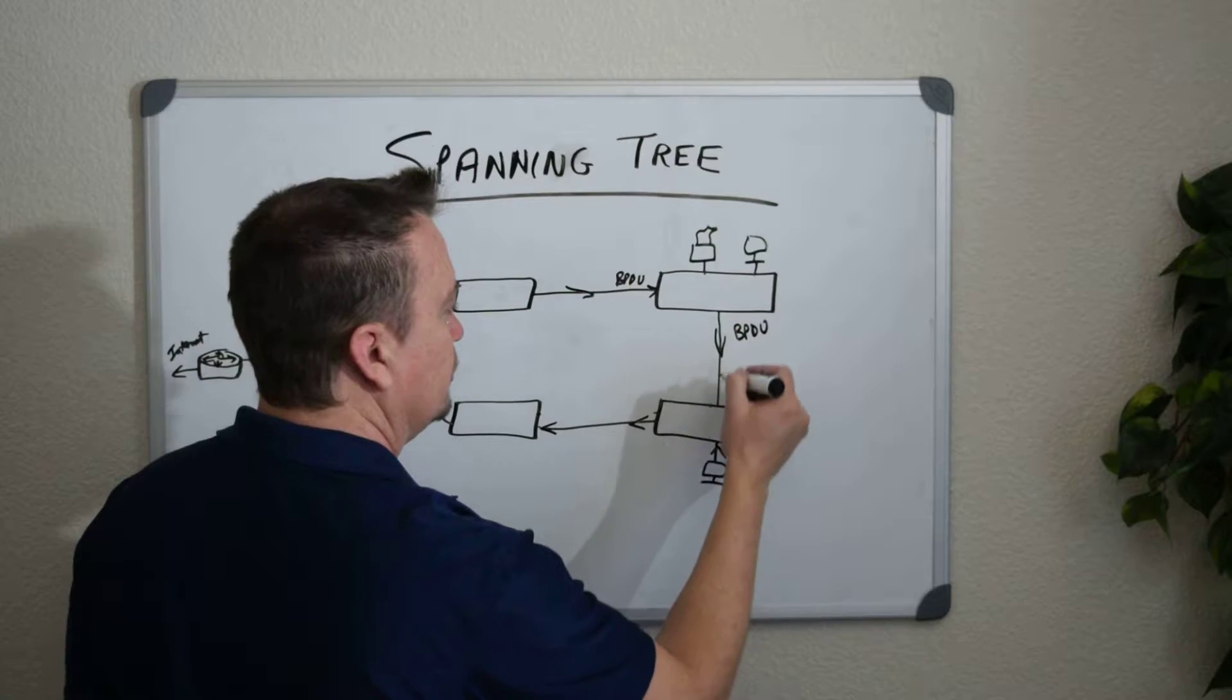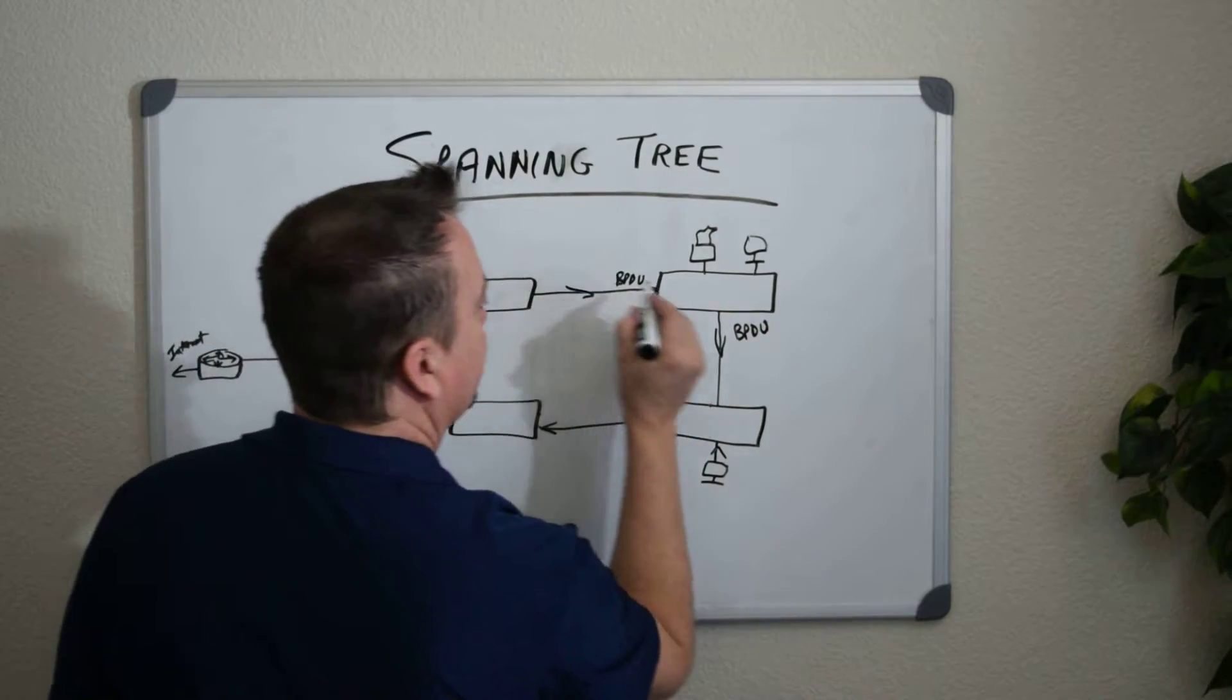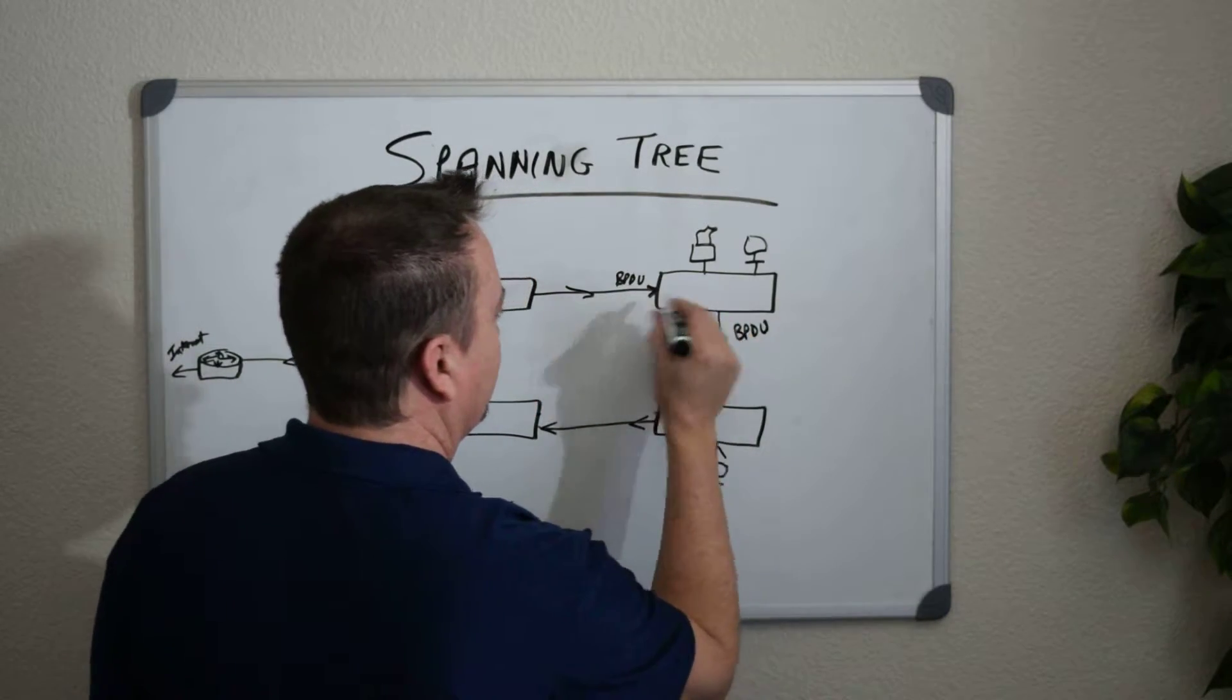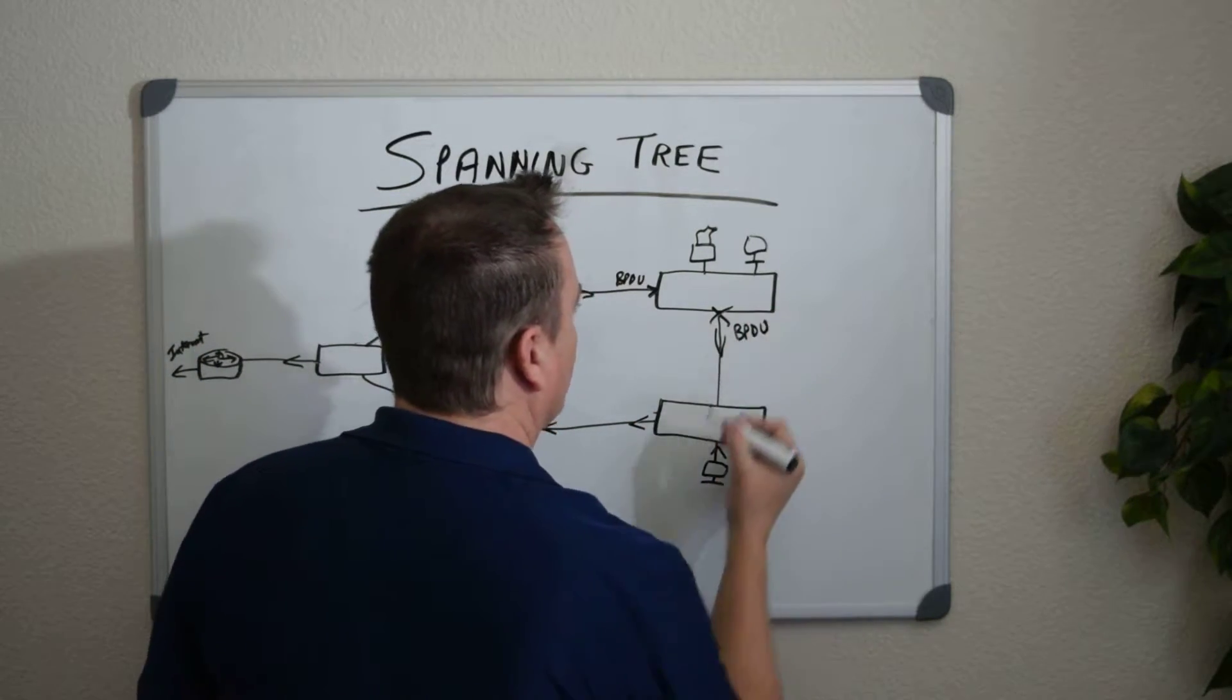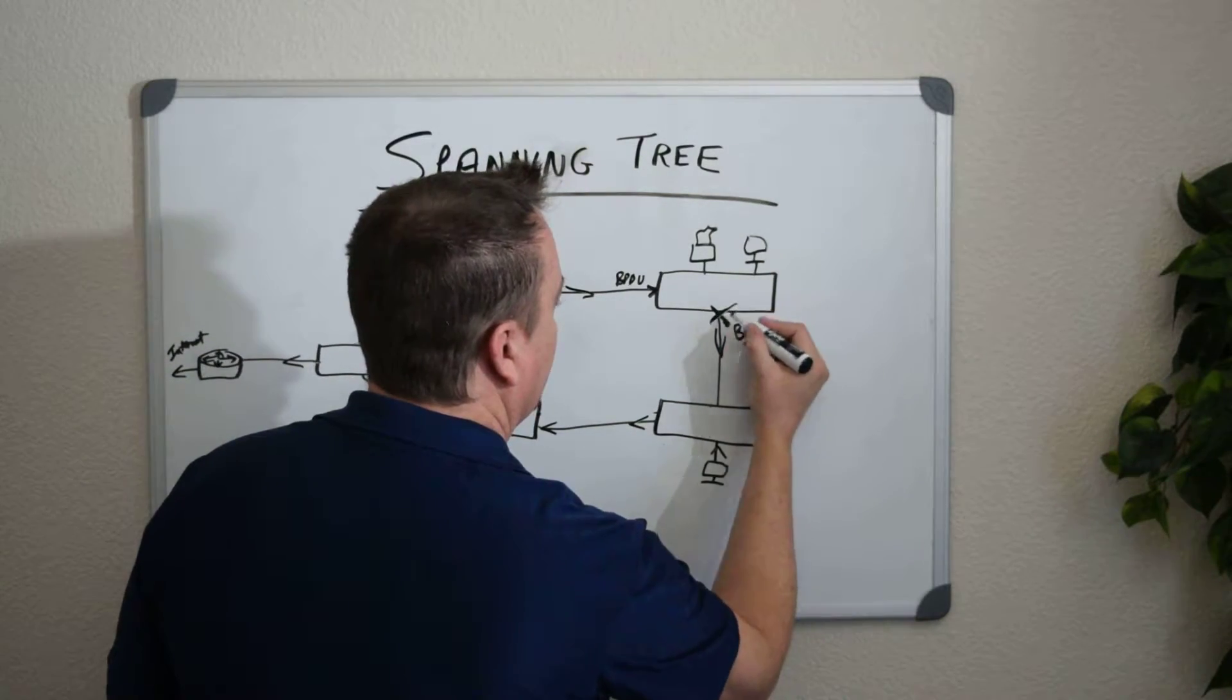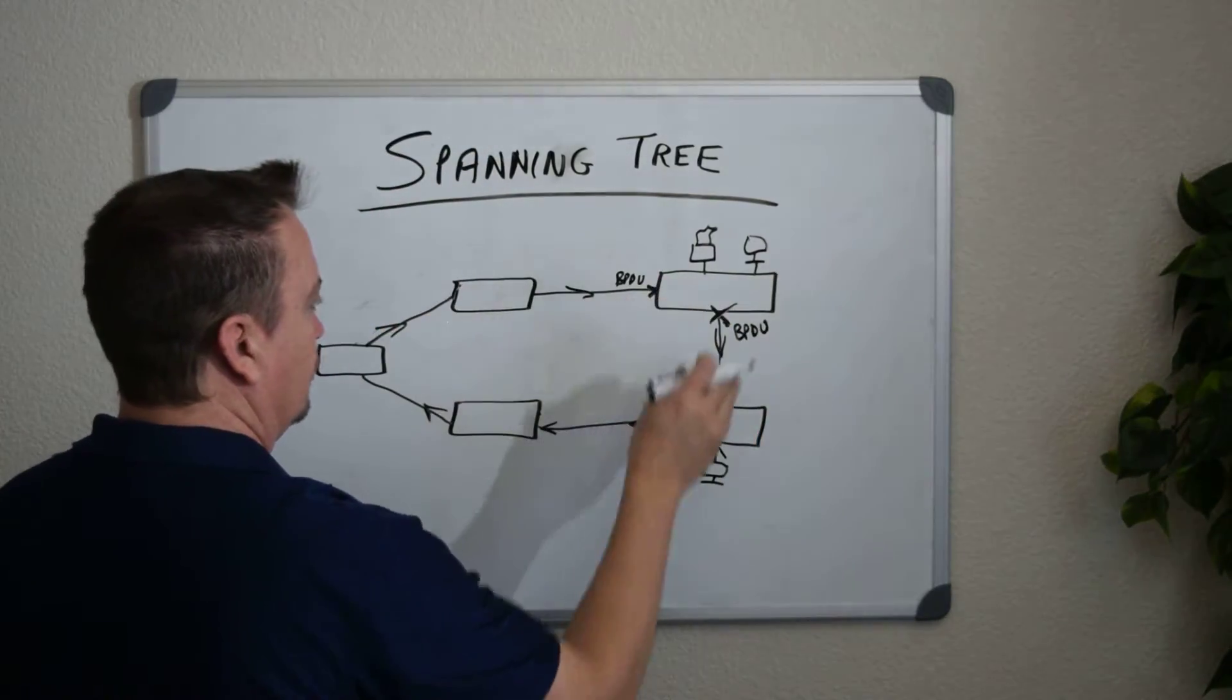And it says, I'm not going to have a loop there because I sent it out here, and it managed to come back in on this other interface of mine. So I'm going to do whatever I need to do. I'm going to determine the cost of these connections. And I'm going to say, this one has the highest cost. So I'm going to block traffic to it. I'm just going to turn it off. That way, that loop will no longer exist.